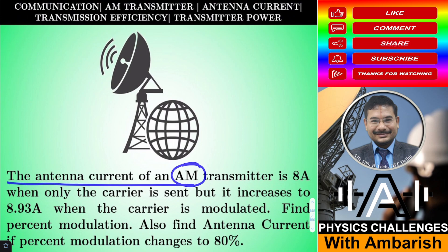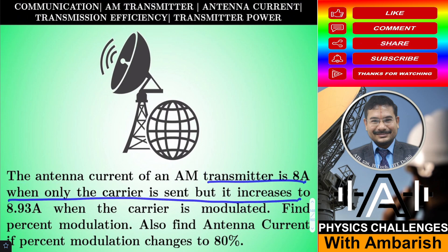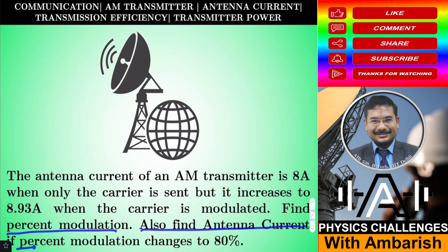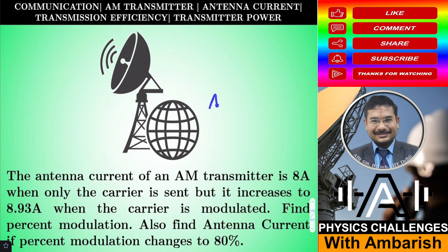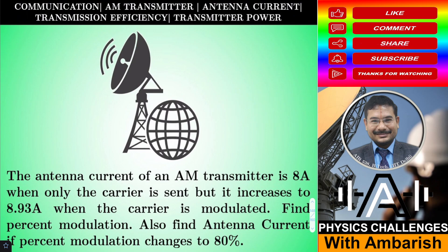The antenna current of an amplitude modulation transmitter is 8 amperes when only the carrier is sent, but it increases to 8.93 amperes when the carrier is modulated. Find the percent modulation. Also find the antenna current if percent modulation changes to 80%. The carrier wave is something like AC sine of omega-C times T, but the amplitude modulated signal has AC taken common outside, giving 1 plus mu times sine of omega-M times T, all multiplied by sine of omega-C times T.